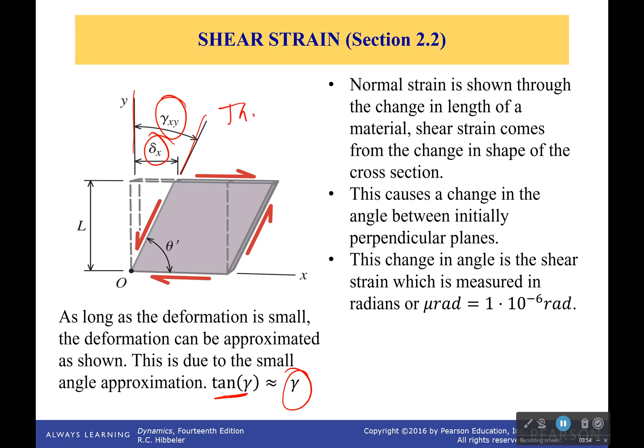Because remember, tan of an angle, tan of theta, that's equal to opposite over adjacent. Opposite over adjacent. And just like with normal strain, normal strain was equal to the deformation over length. Well, in this case, the opposite of this angle right here would be equal to this delta over L. And so I can measure both. I could calculate it.